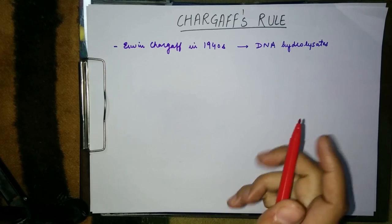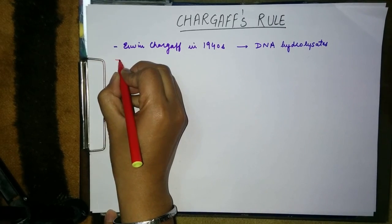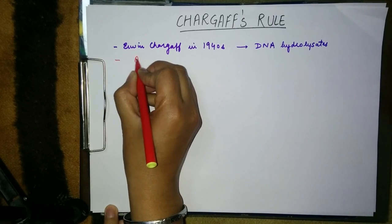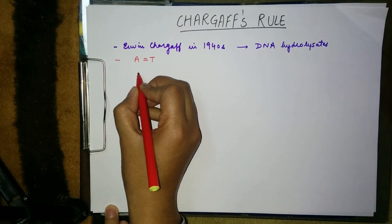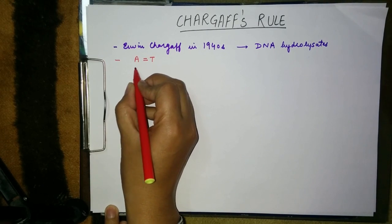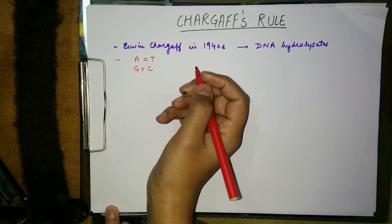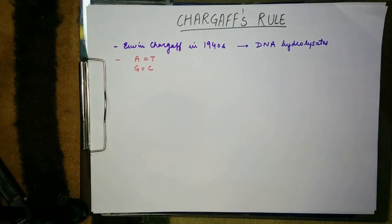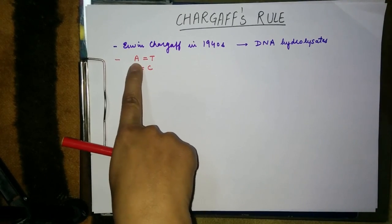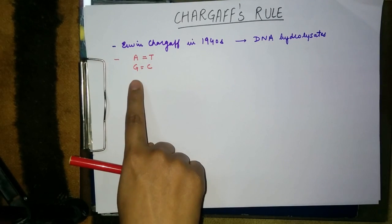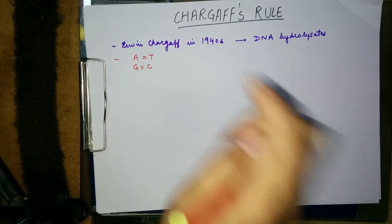His observation was that the DNA had an equal number of adenine and thymine, and an equal number of guanine and cytosine residues. This means there were equal numbers of adenine and thymine residues, and equal numbers of guanine and cytosine residues.